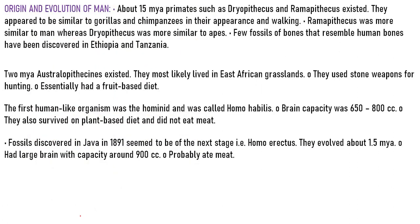The amphibians that lived on both land and water — however, these were ancestors of modern-day frogs and salamanders. Everything went out and amphibians evolved into reptiles. So lastly, the origin and evolution of man.